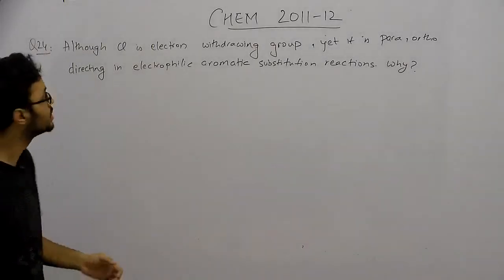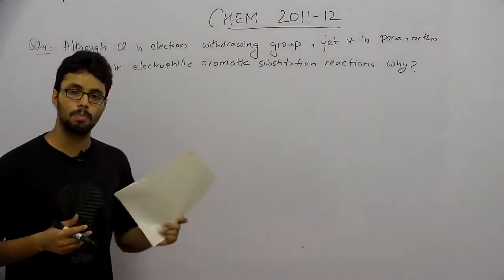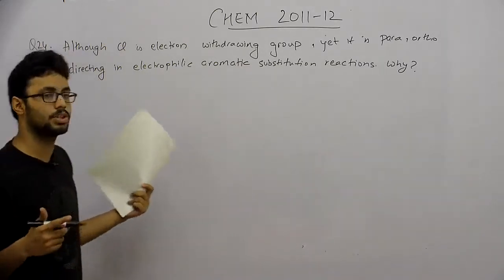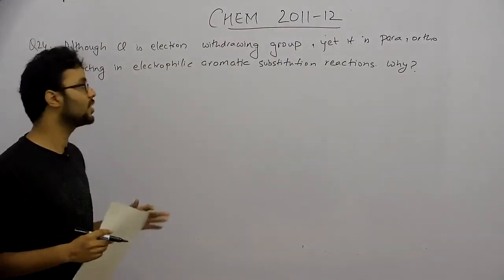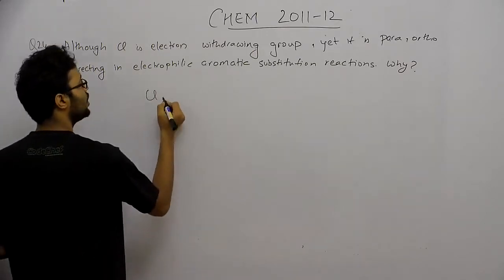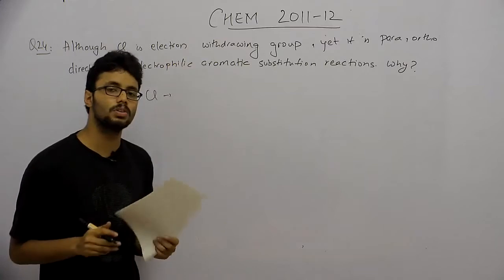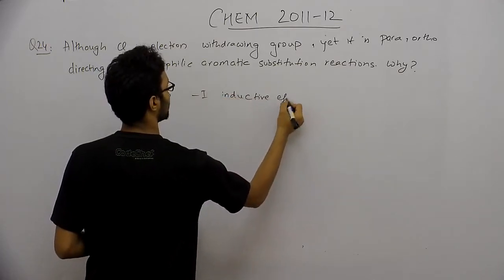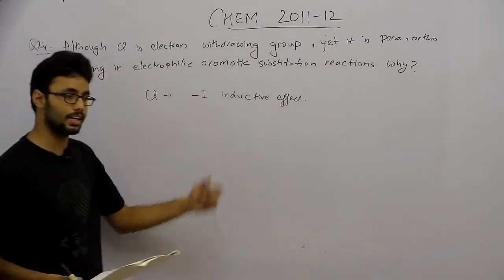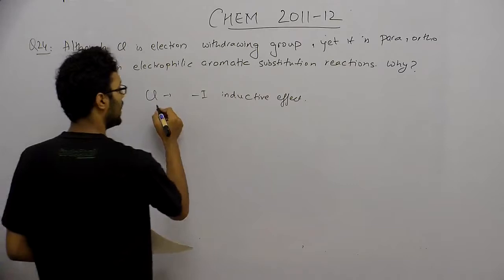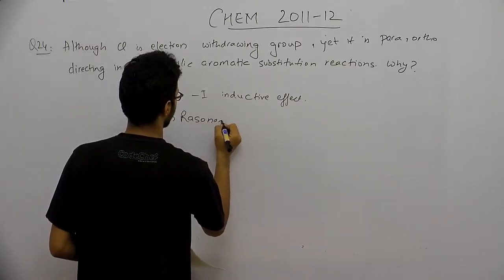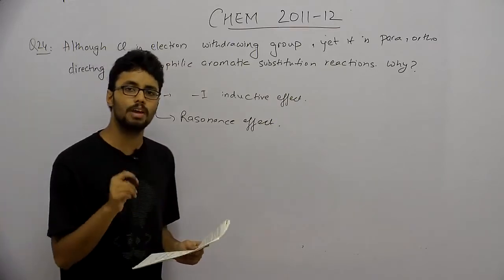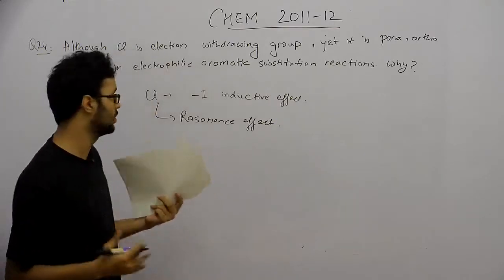The next question: although chlorine is an electron-withdrawing group, yet it is ortho/para directing in electrophilic aromatic substitution reactions. Let us study the nature of the chlorine atom. In aromatic compounds, chlorine has a minus I inductive effect, giving it an electron-withdrawing tendency. However, it also plays a resonance effect, and due to this resonance effect, it has a tendency to donate electrons into the aromatic ring.